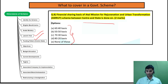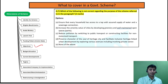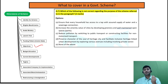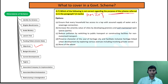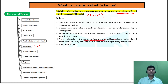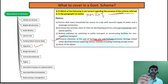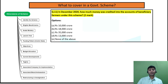Next are the objectives — the key points of the scheme, what the scheme is trying to achieve. For example, there was a question on AMRUT scheme in the 2021 exam: which of the following is not correct regarding the purpose of the scheme discussed in the passage? Heritage city development is not one of AMRUT's objectives — that was the correct answer. So read the objectives very carefully.